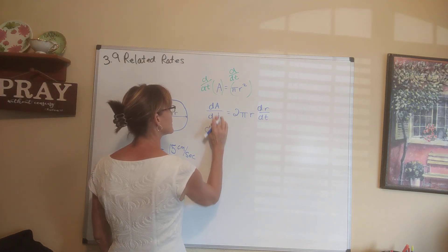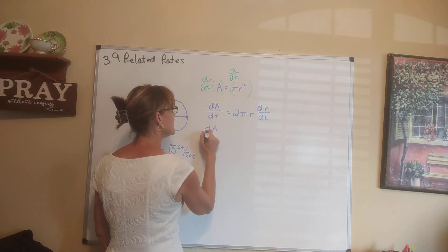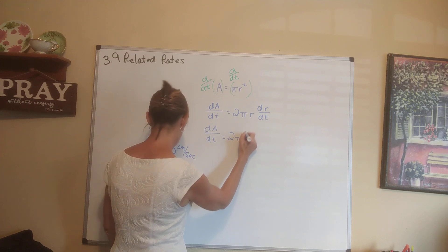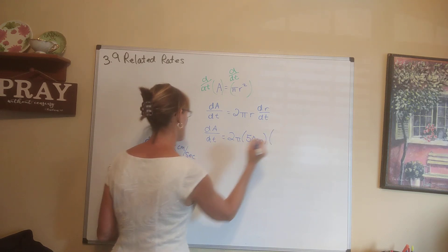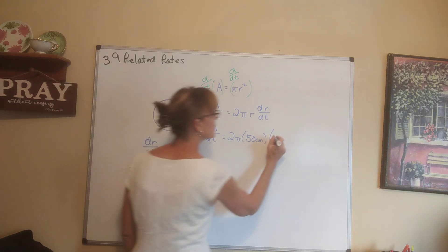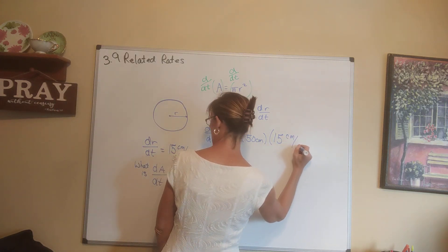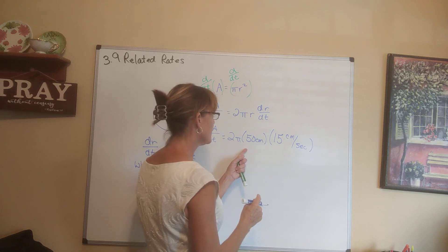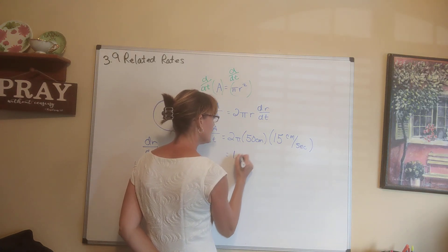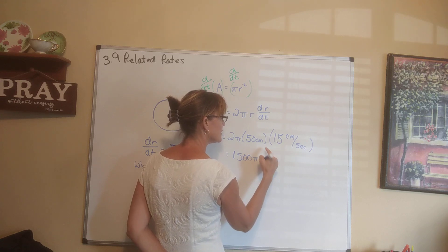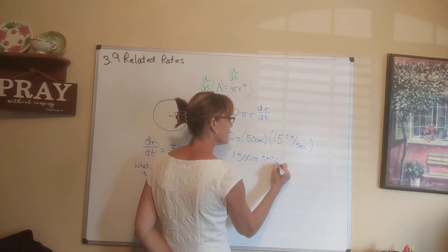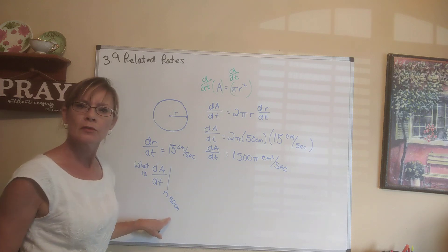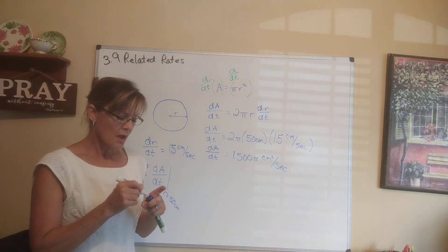dA/dt equals 2π times 50 centimeters times dr/dt which is 15 centimeters per second. 2 times 50 times 15 is 1500π. Centimeters times centimeters is centimeters squared per second. So the rate of change of the area is 1500π square centimeters per second at the moment when the radius is 50 centimeters.